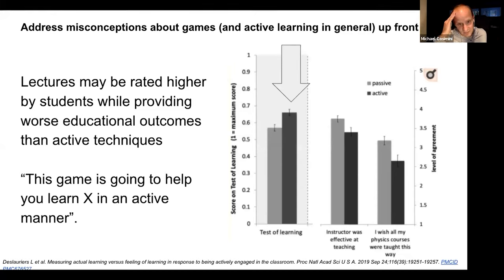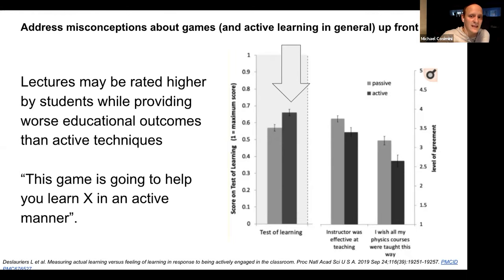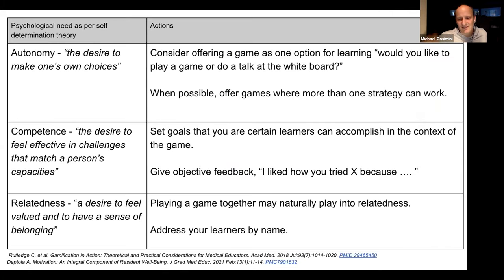One article I absolutely love was a randomized study where they compared instruction by active techniques to traditional lecture. Students rated the traditional instruction — a very eloquent presenter — very highly, but retention of knowledge and transfer of information was lower compared to active techniques. So if students are going to review us and we know active techniques give lower reviews, we should address that upfront: say, we're going to teach with a game, and this game is designed to teach you X.